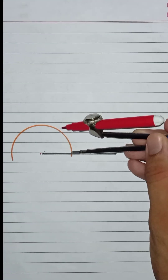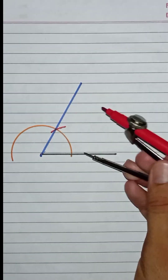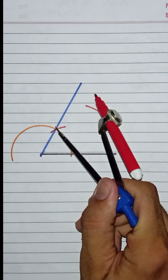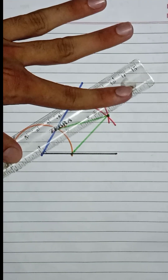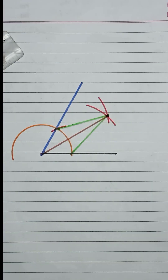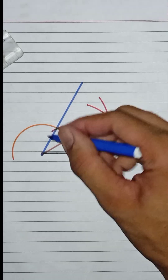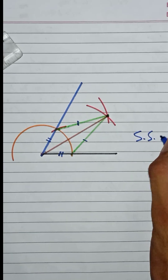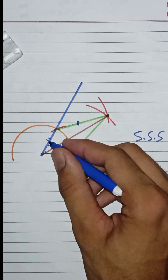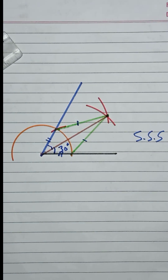Now let's move to the next proof — the proof for the construction of a 30 degree angle. This is a 60 degree angle. Now from these two points draw equal arcs here, then join the line. Here are two triangles. In these triangles, this side is equal to this side as the arc length was the same, and these two sides are also equal, and this side is the common side. So these two triangles are congruent by the side-side-side axiom. These are the corresponding angles, so they are equal. This whole angle is 60 degrees, so this angle will be 30 degrees. This is how we can construct a 30 degree angle.